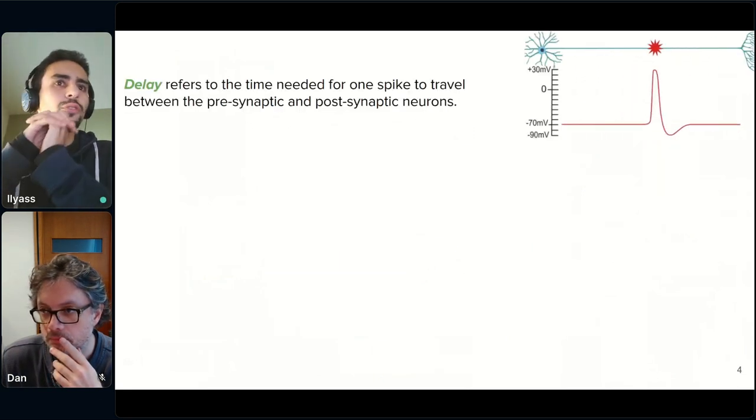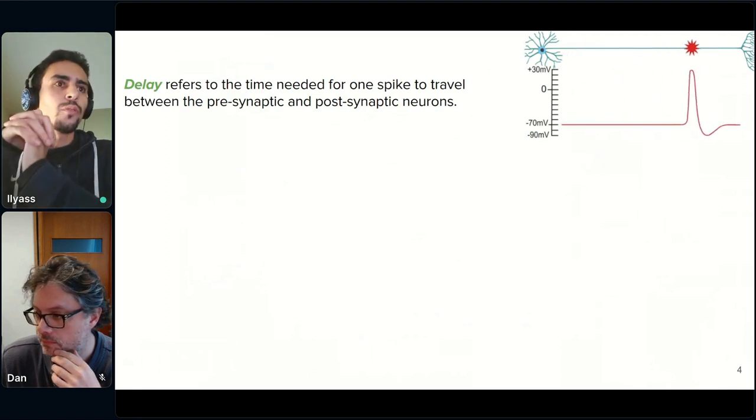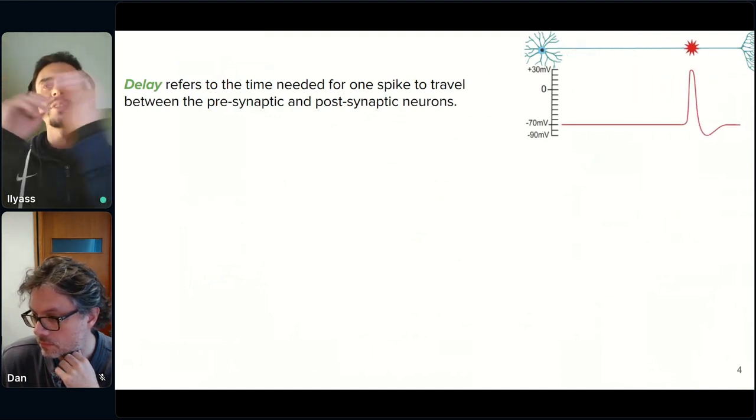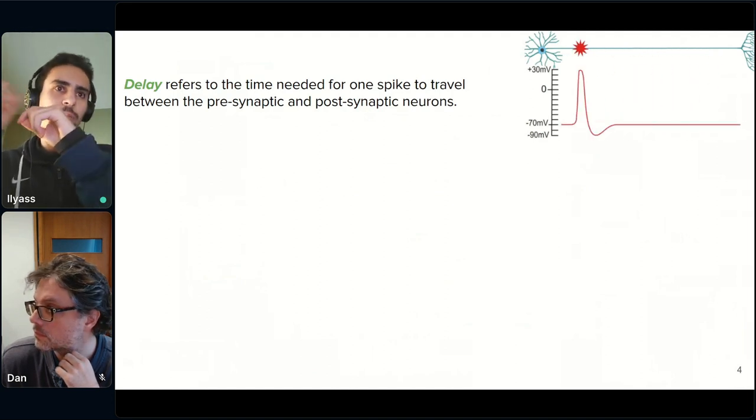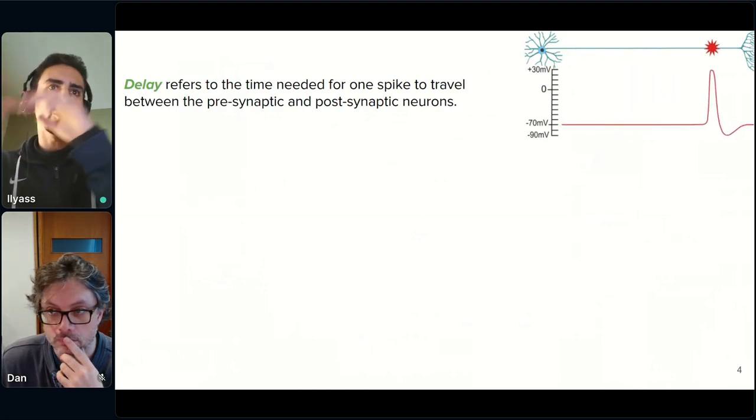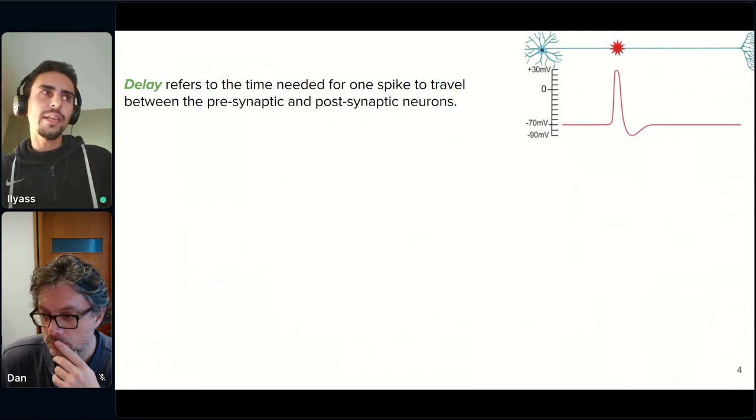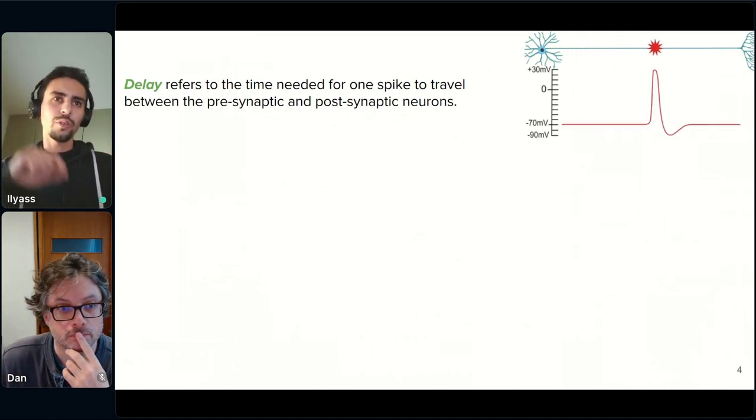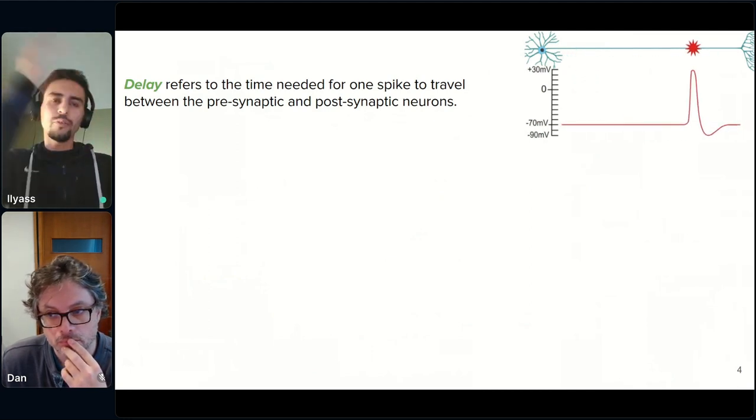So, before going any further, I will start with defining what I mean by delay. For us in this context, delay refers to the time needed for one spike to travel between two neurons. And to be more precise, we can differentiate between synaptic delays and axonal delays. But in the context of machine learning, we can simply say that a synaptic delay is more generalization of an axonal delay, because it's equivalent to having a different delay for every synapse between neurons.